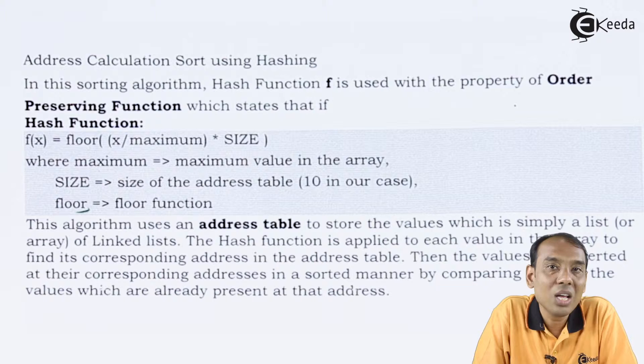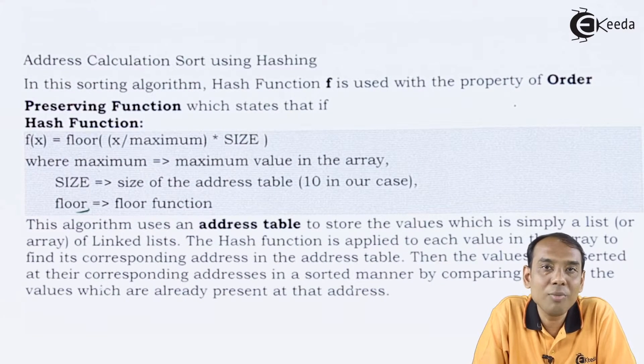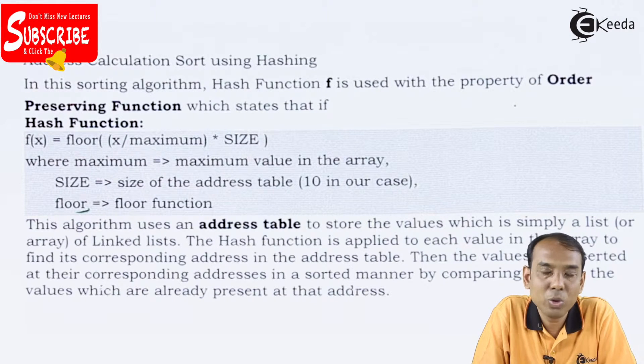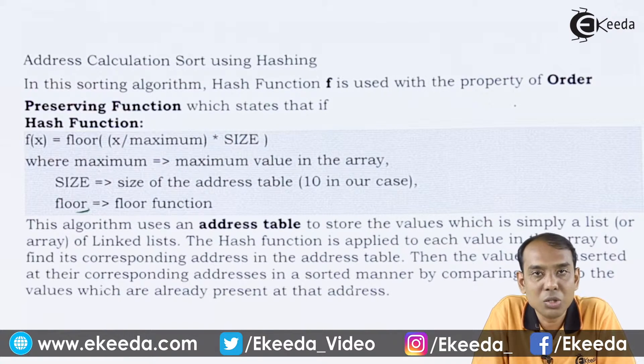If I could have used ceiling function then it could have been the value as 4. So floor function is to give me the lowest integer value of the given number. So if it is 3.3, 3.2, 3.4, the value would be 3 only.